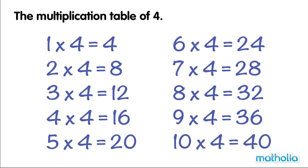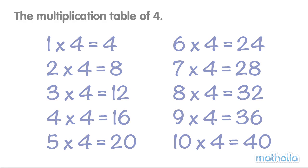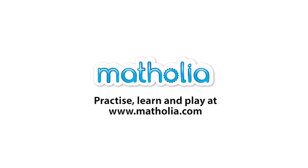Seven fours are twenty-eight. Eight fours are thirty-two. Nine fours are thirty-six. Ten fours are forty.